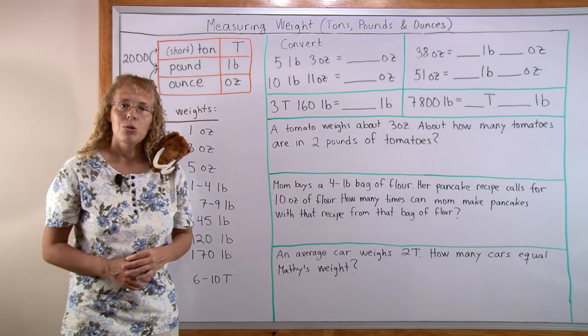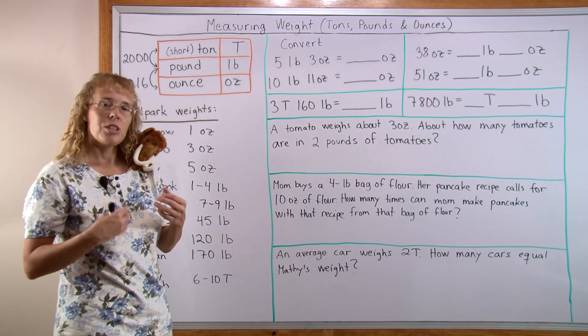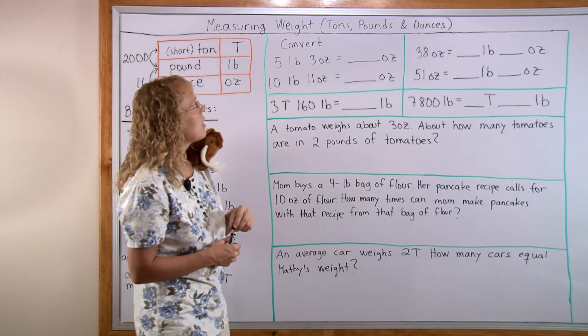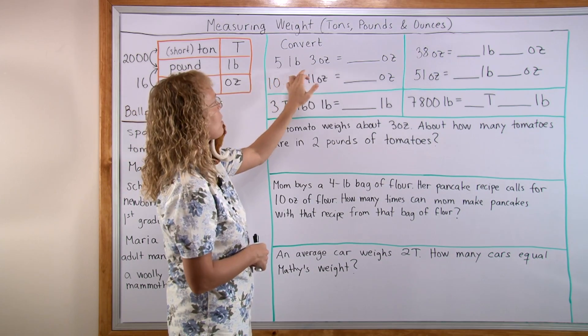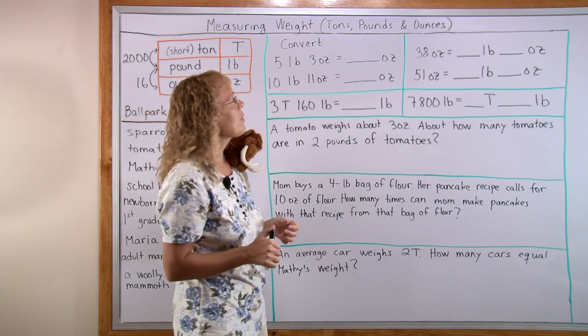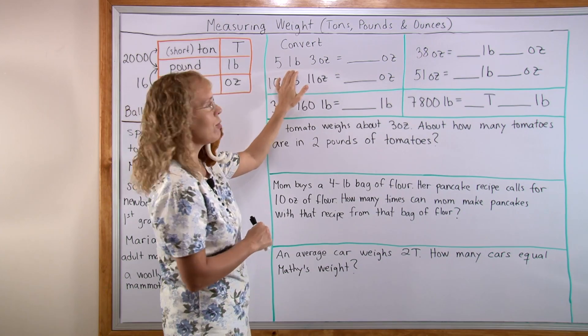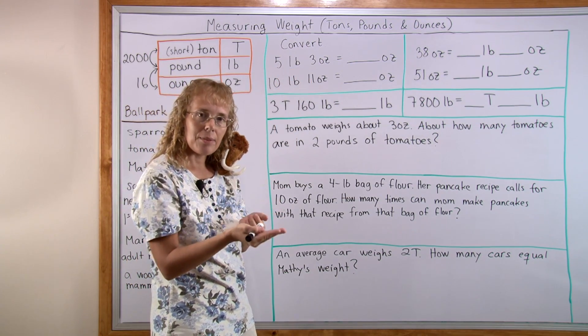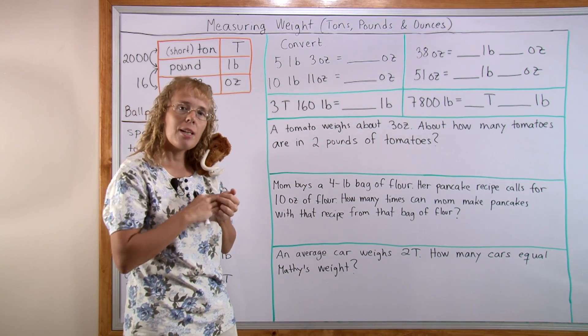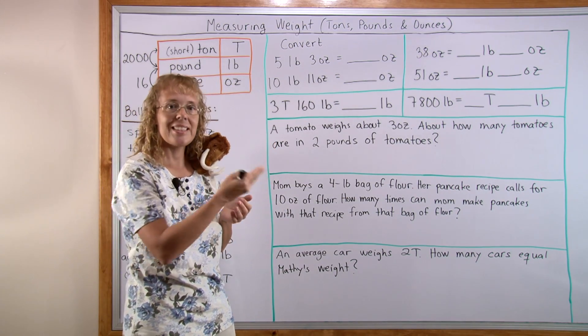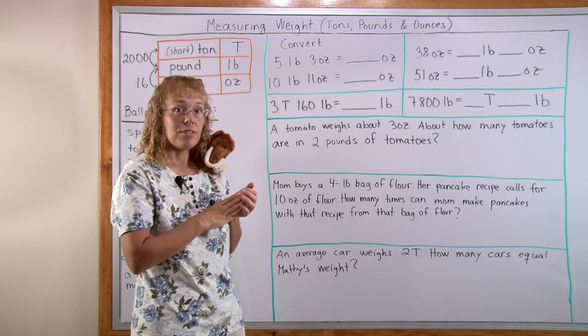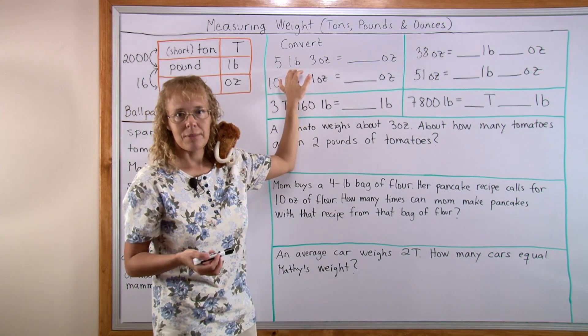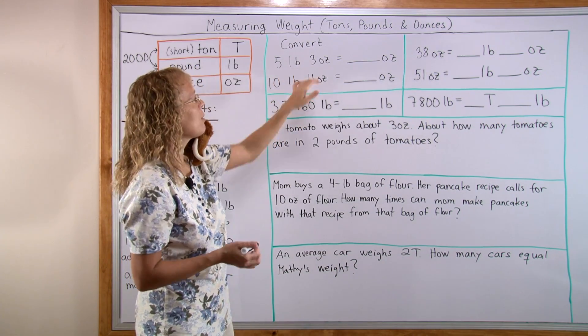Now let's do some conversion exercises. In fourth grade, students can start converting between these units. First: five pounds and three ounces into ounces. One pound is 16 ounces, so five pounds is five times 16. You can multiply in parts: five times 10 is 50, five times six is 30, total 80 ounces. And three more makes 83 ounces.